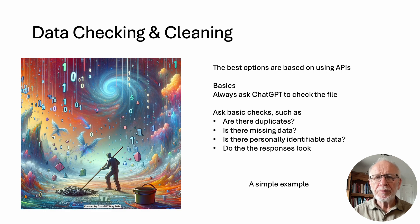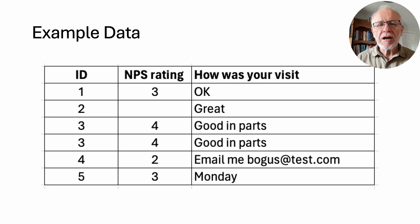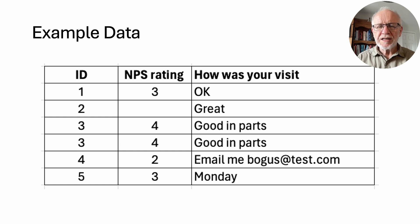I'm going to show you a simple example. Here is a very small dataset that I constructed myself. You can see that the first respondent looks okay. The second respondent has got some missing data for the NPS rating. Participant 3 is repeated twice — there's a duplicate in there. Participant 4 has got some personally identifiable information in their open-ended comments. And if we look at Participant 5, the question was 'how was your visit?' and they said 'Monday' — doesn't look like a good response.